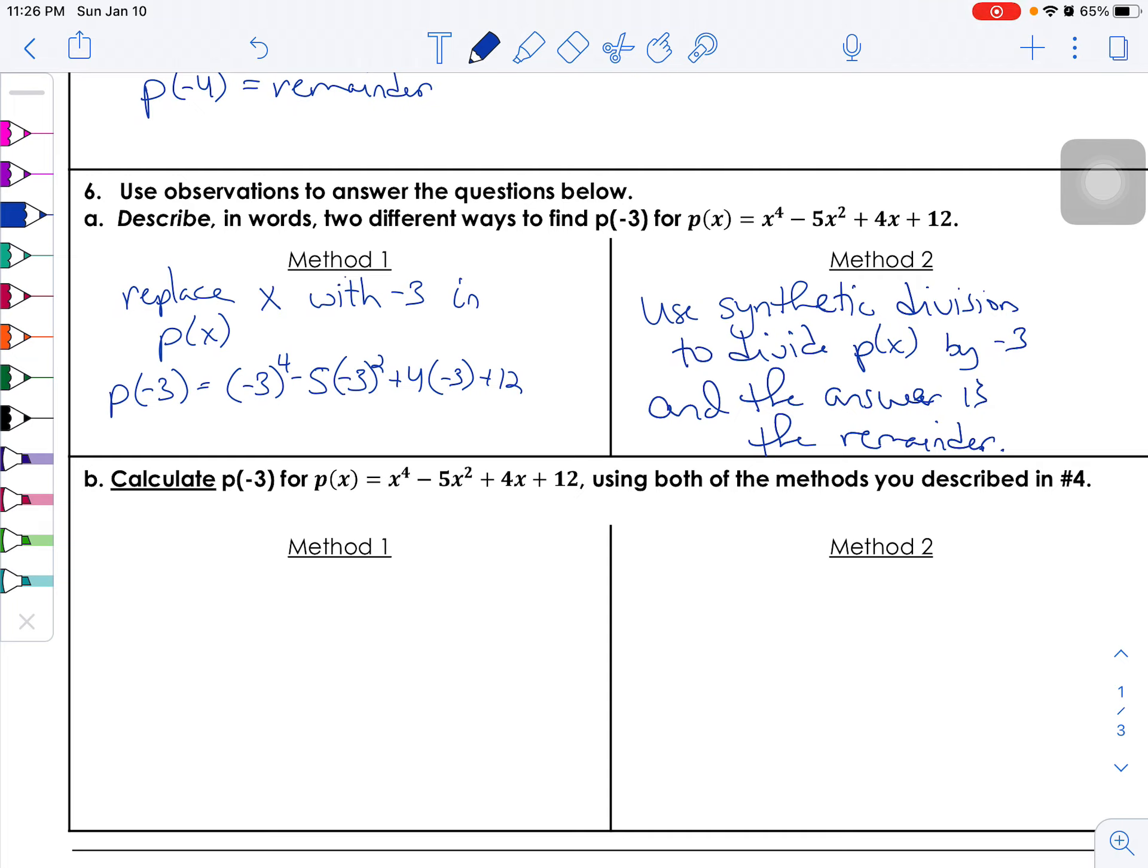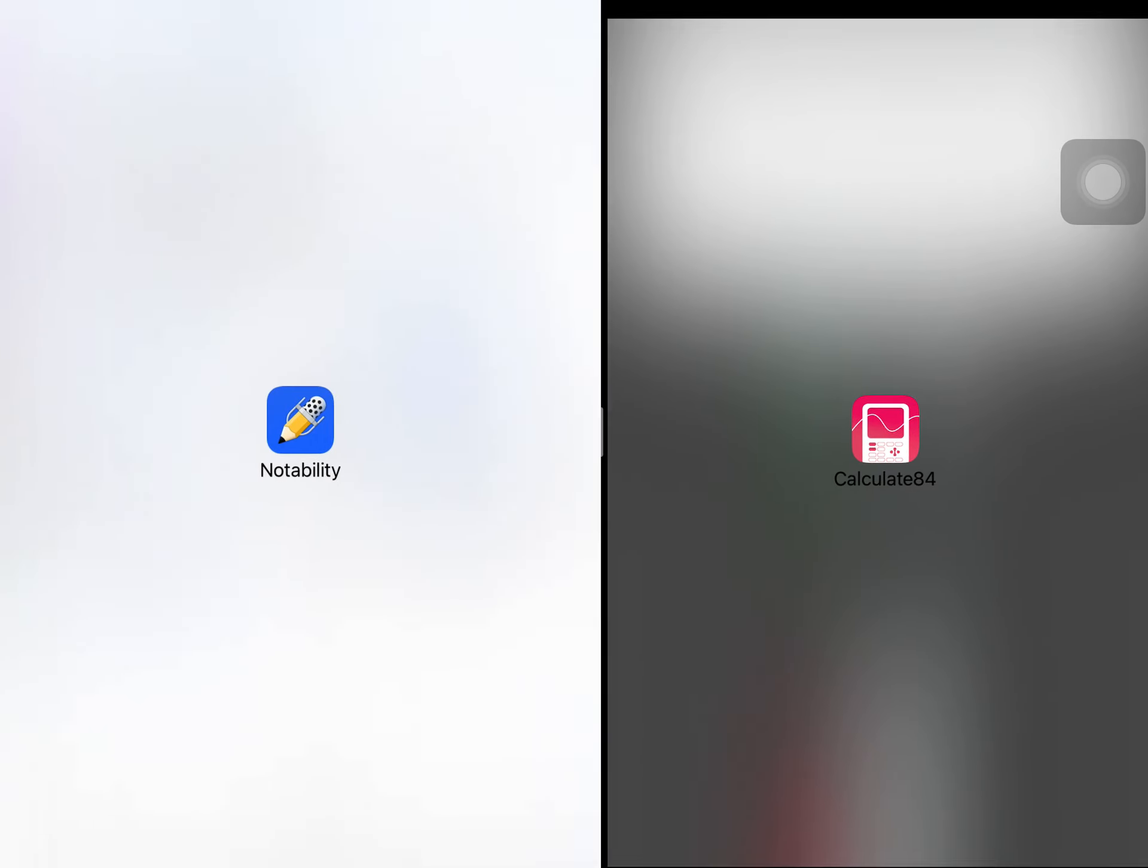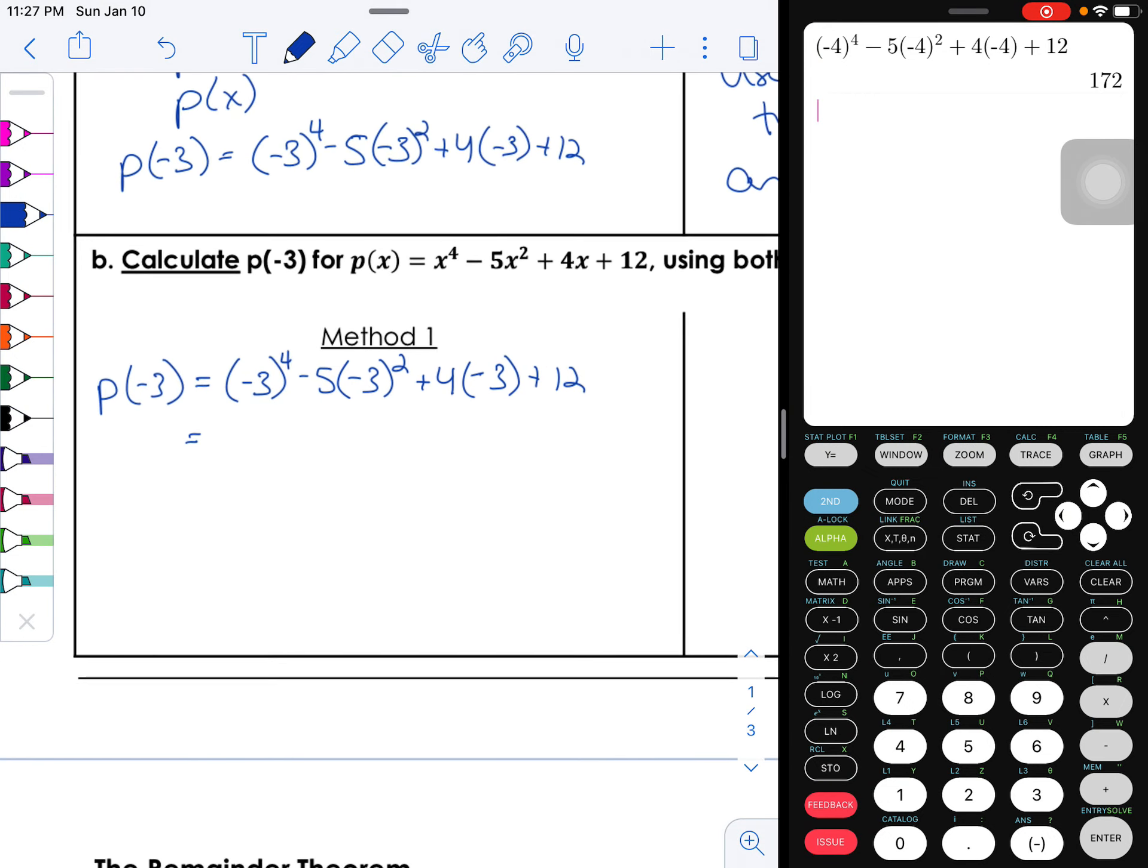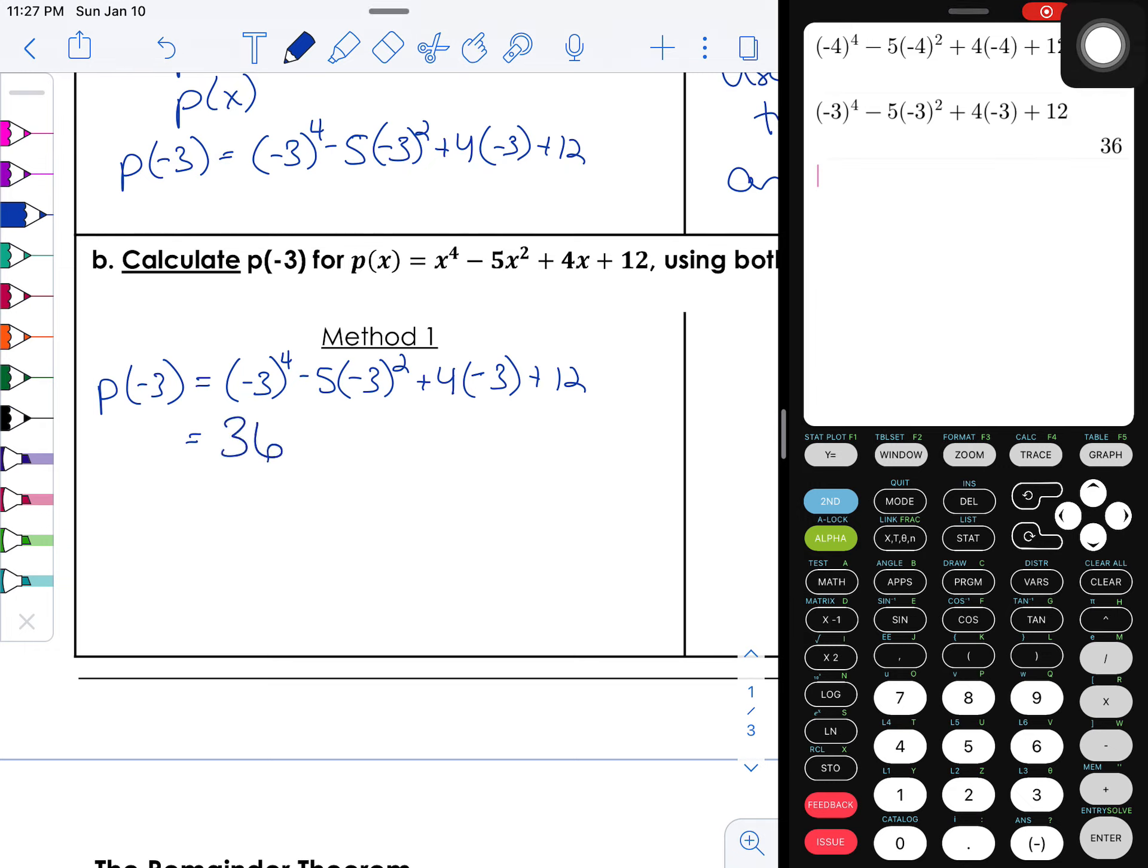So we're actually going to do part b here, to actually figure it out. Okay, so method one is going to be the function method. So we're going to find p of negative three, and like I did, every one of these x's is going to get replaced with a negative three. All right, so this is going to be a great place for me to go ahead and pop back up Calculator 84 or whatever your technology of choice is here. All right, negative three, I'm going to raise that to the fourth power, minus five times negative three to the second power, plus four times negative three, and then plus 12. I got 36.